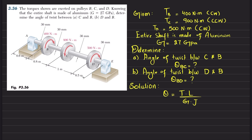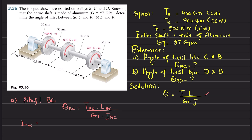As we know, the angle of twist theta is equal to T times L divided by G times J. First, we will find theta_BC, which equals T_BC times L_BC divided by G times J_BC. L_BC is given as 0.8 meters.